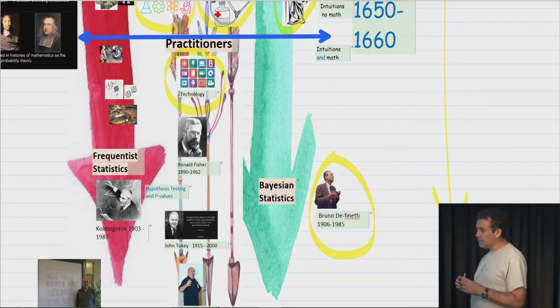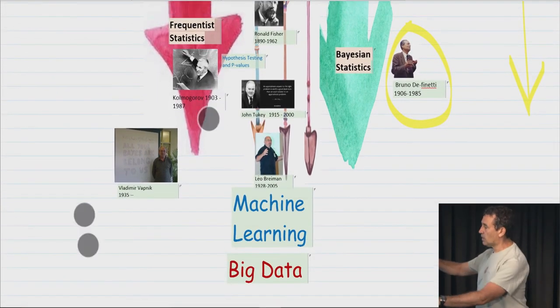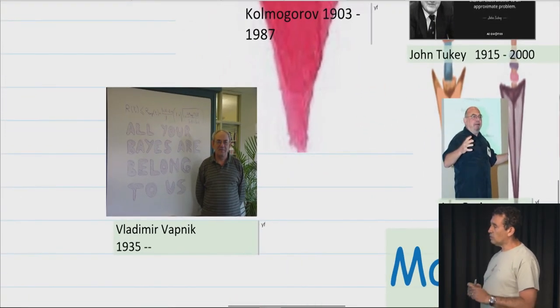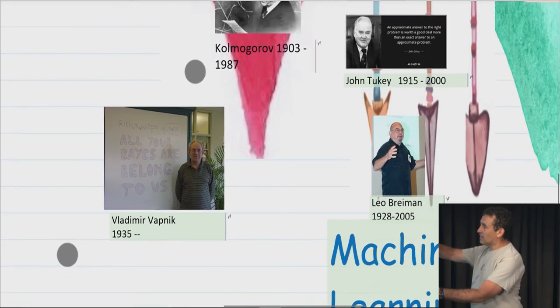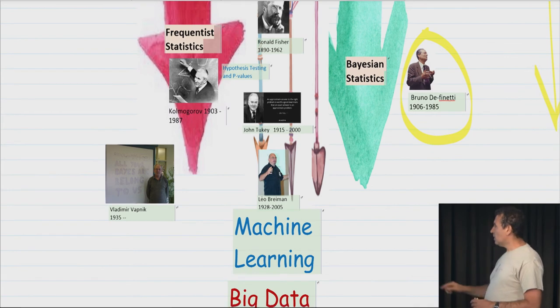And there's definitely a tension between the two. So this is a pretty famous picture by now of Vapnik standing around next to a board, and in the board it says, all your Bayes belong to us. So this is a clear slight of Bayesian statistics.